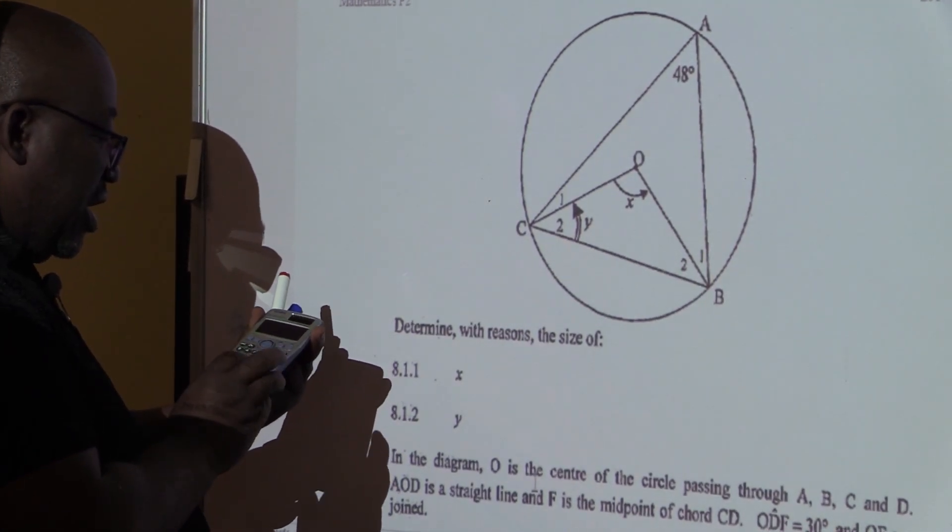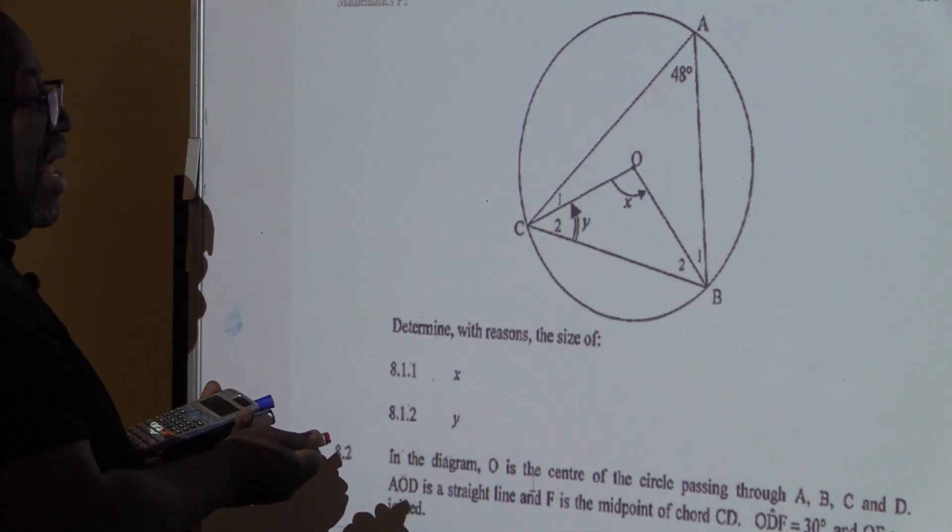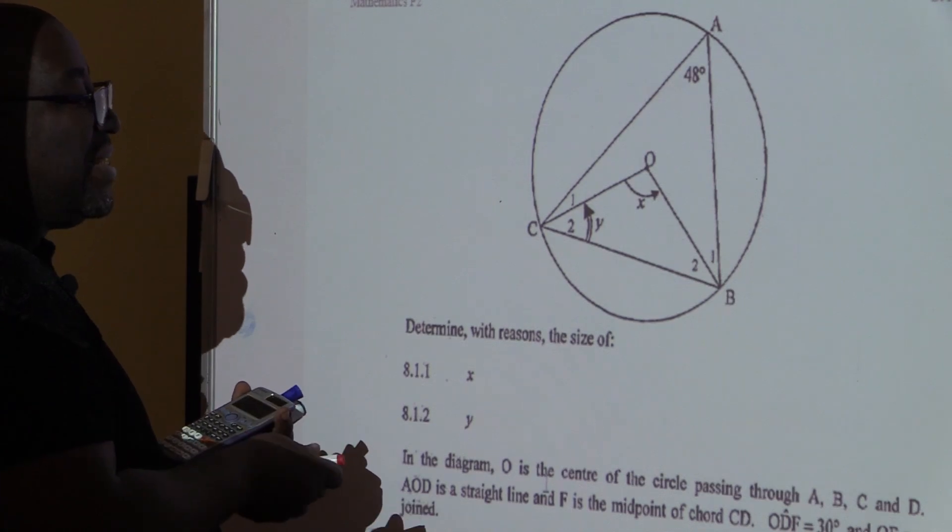If that one is 48, I multiply that by 2 to find the value of angle X. In this particular case, angle X will be equal to 96 degrees.